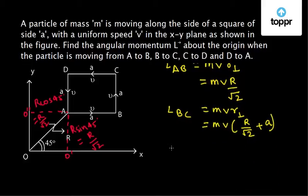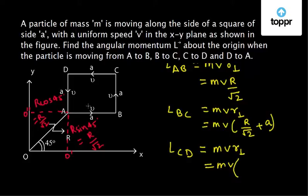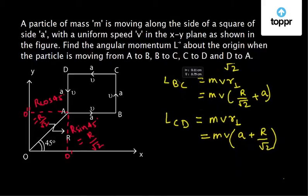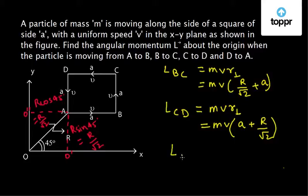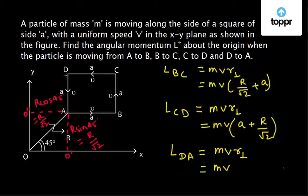For the path C to D, L(C→D) = m·v·r_perp, where r_perp = DA + AO' = a + r/√2. For the path D to A, L(D→A) = m·v·r_perp, where the perpendicular distance is O''A = r/√2. So L(D→A) = mv·(r/√2). We have now found the magnitudes of angular momentum for all four paths, but we also need to find the directions.